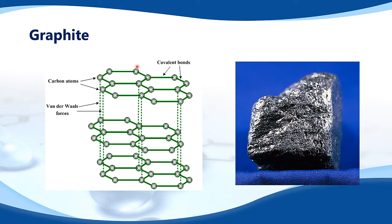Here's the structure of graphite, and on the right side there's a piece of graphite. Graphite is made up of carbon, and each carbon atom is bonded to three other carbon atoms. The bond angle between the carbons is 120 degrees with a trigonal planar arrangement. Graphite has a layered structure, and the layers are held together by weak van der Waals forces. Because of these weak van der Waals forces, the layers can slide over each other, which makes graphite quite soft.